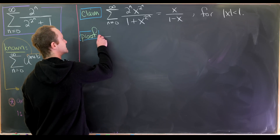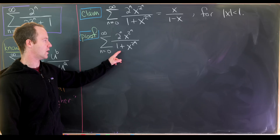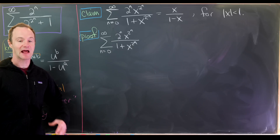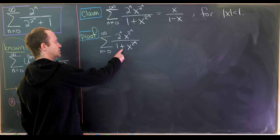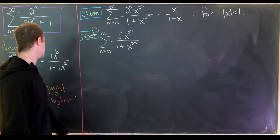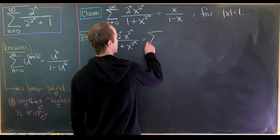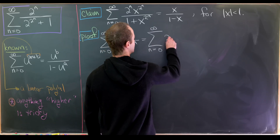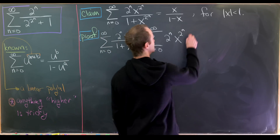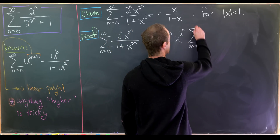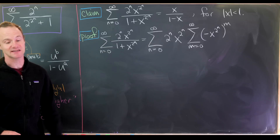I'll copy this sum down and take this numerator over 1 plus x to the 2 to the n and expand it as a geometric series. Expanding it as a geometric series means our common ratio is minus x to the 2 to the n. That allows us to write this as the sum as n goes from 0 to infinity of 2 to the n times x to the 2 to the n, times the sum as m goes from 0 to infinity of minus x to the 2 to the n all raised to the m power.